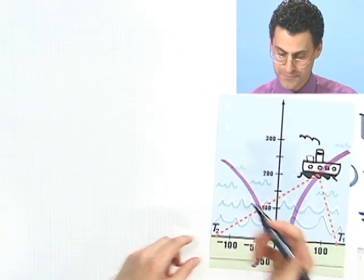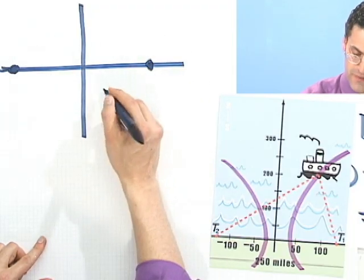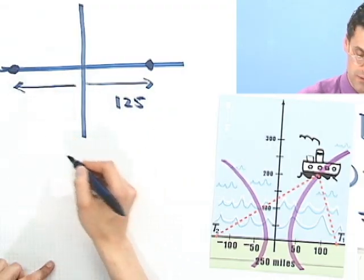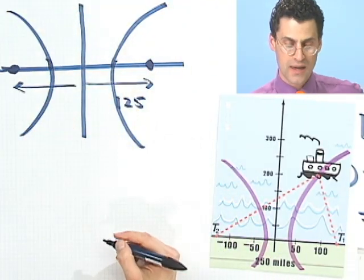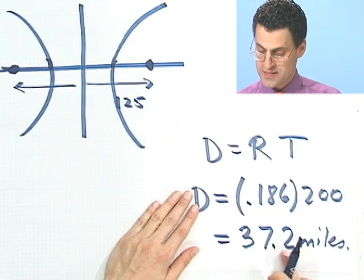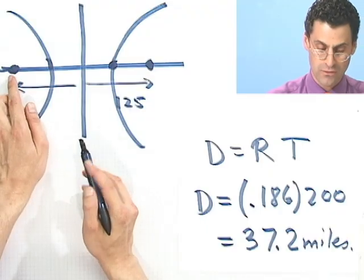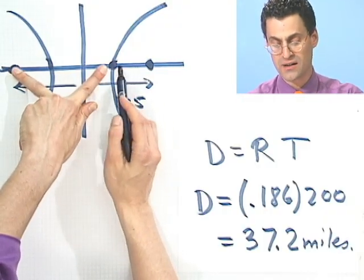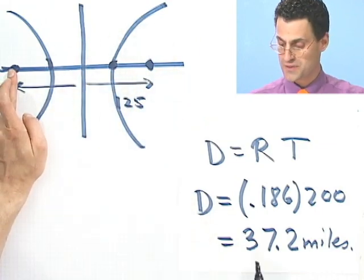Let me draw a picture of this. We have these foci way out here. This distance is 125 miles. The hyperbola lives somewhere in there. The difference between the two distances is always 37.2 miles. Let's think about what happens at this vertex point.